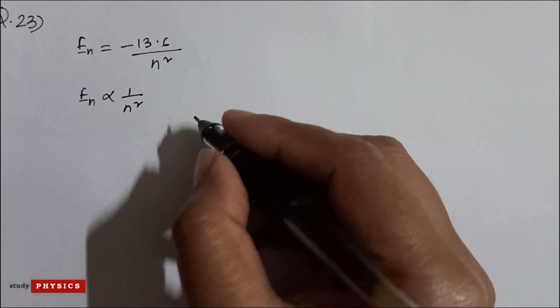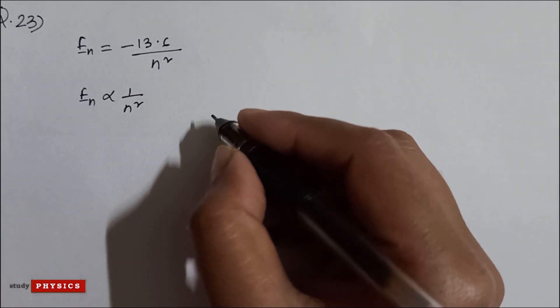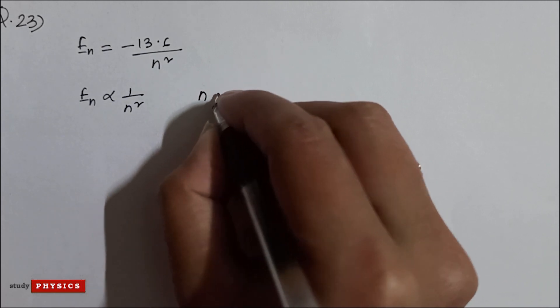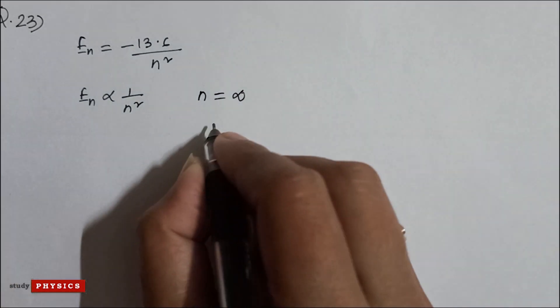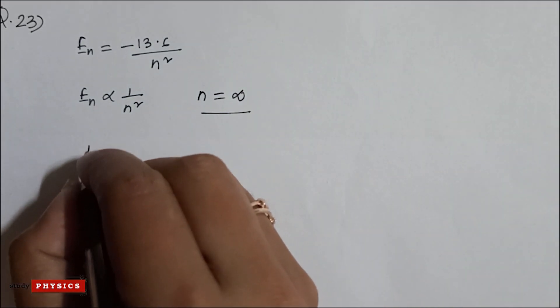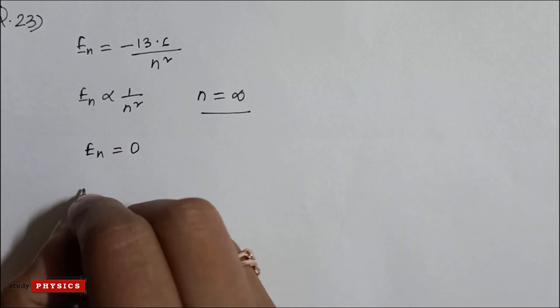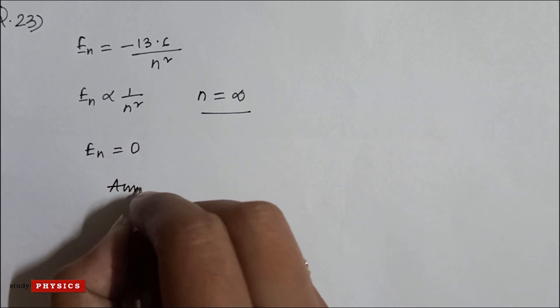For the highest possible electronic energy eigenstate, N should be infinity. That means if N is infinity, then the energy must be 0. So the correct option here is option A, 0.